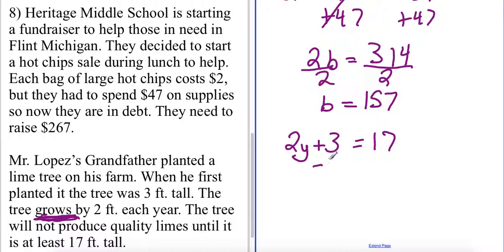So as you can probably tell we'll subtract by our constant. We'll have 2y equaling 14. Divide both sides by my constant and I'll get that it will take 7 years for that tree to produce quality limes.